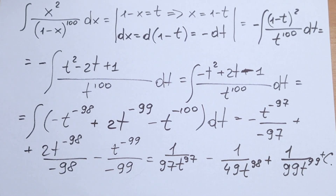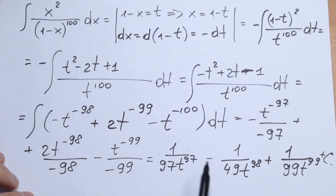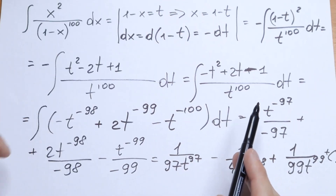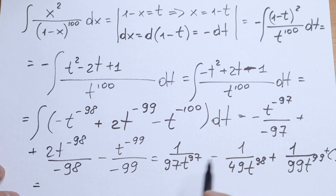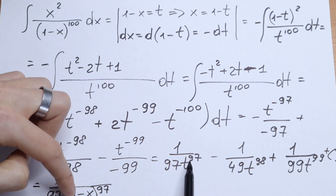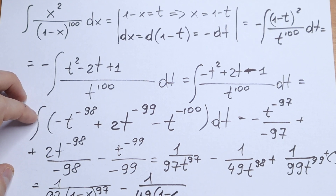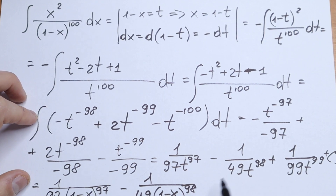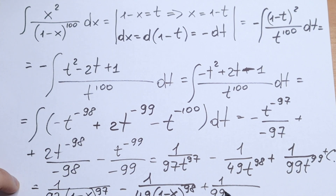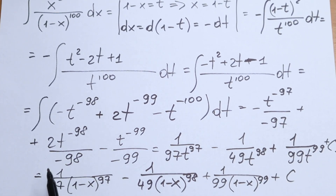And plus C. But we had a substitution — t equals 1 minus x — so this is not the final answer. We need to change t back to 1 minus x. So our final answer is: 1 over 97·(1 minus x) to the power 97, minus 1 over 49·(1 minus x) to the power 98, plus 1 over 99·(1 minus x) to the power 99, plus C.